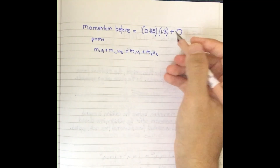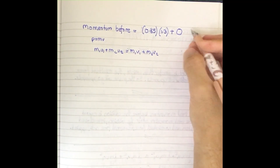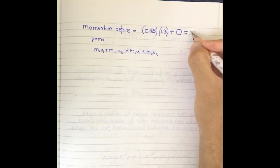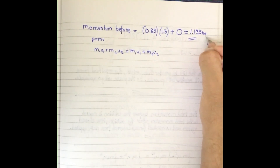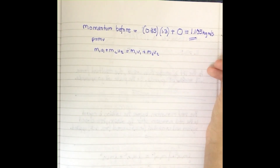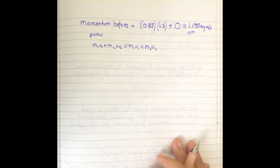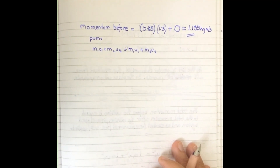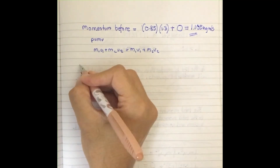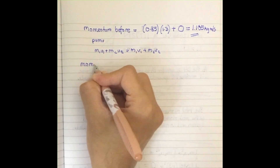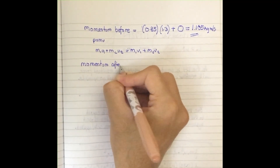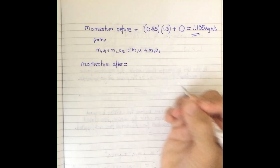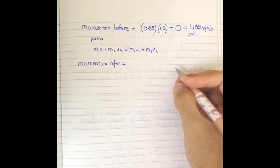I prefer to set it up this way because it's much easier to identify what you're trying to do. The value I get for the initial momentum is a specific value in kg·m/s. Now I have to find the momentum after the collision, so I'll draw the vectors out to understand what's happening.